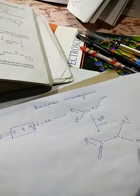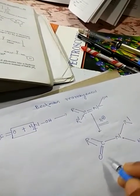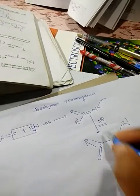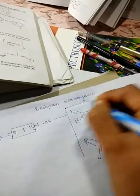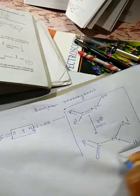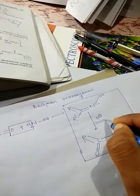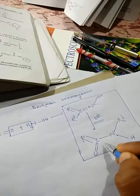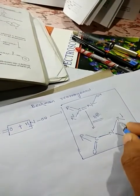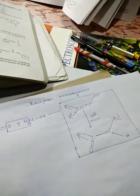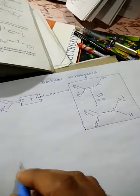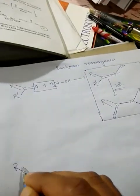The product is an N-substituted amide. This is the migration of this group to this side. This is the Beckman rearrangement: the keto oxime, when treated with acidic medium, will form N-substituted amide.